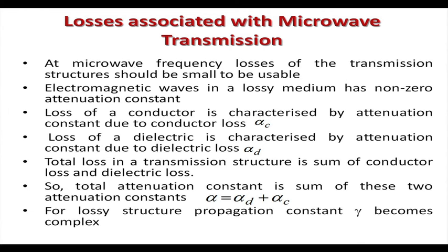The attenuation constant for conductors is called α_c and for dielectrics it is called α_d. The total loss in a transmission structure is the sum of conductor power loss and dielectric power loss. Therefore the total attenuation constant is also the sum of two attenuation constants: α = α_d + α_c. For a lossy structure the propagation constant becomes complex.